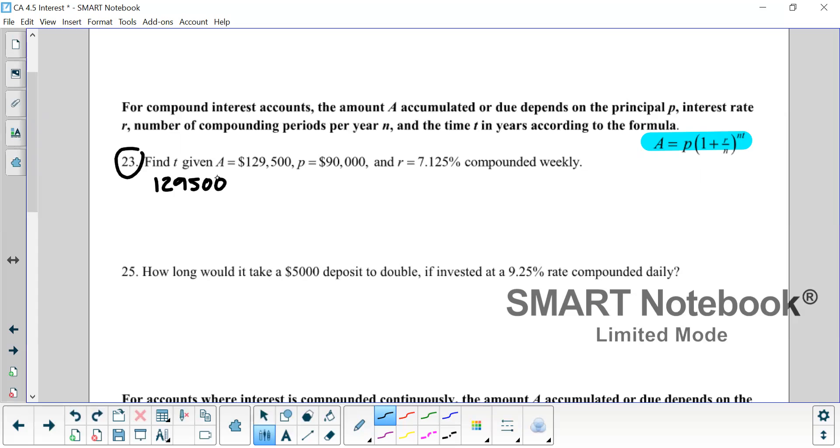So plugging in for A, the 129,500 equals P, which is 90,000 times one plus r over n. So r is given to me in percent form. So I need to convert it first by dividing by 100, which moves the decimal two places to the left. So I'm putting in 0.07125 for r, which is divided by n. And n comes from the compounded weekly. There are 52 weeks in a year, so that's how many times it's going to be calculated. And then outside the parentheses is the exponent n times t. So n again was 52. And t is just going to be t because that's what we're looking for. The problem says find t, so t stays a variable.